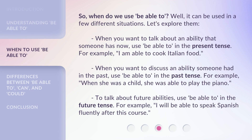So, when do we use 'be able to'? Well, it can be used in a few different situations. Let's explore them. When you want to talk about an ability that someone has now, use 'be able to' in the present tense. For example: 'I am able to cook Italian food.'